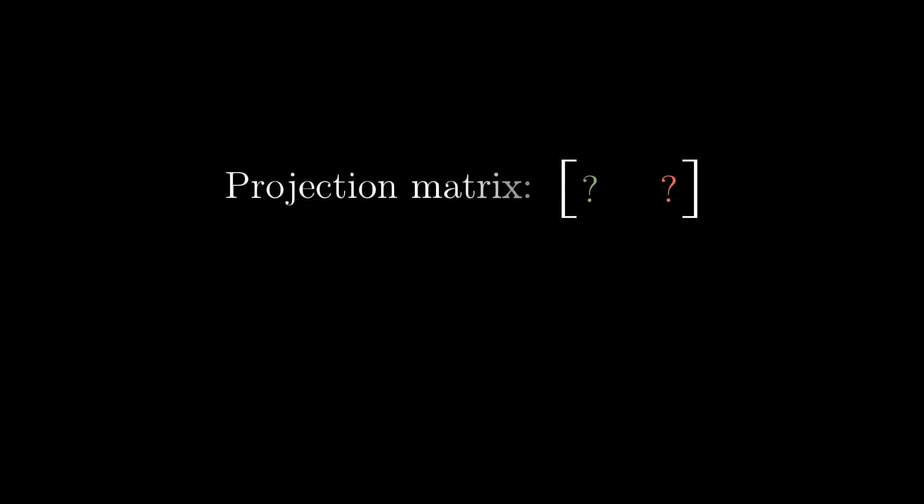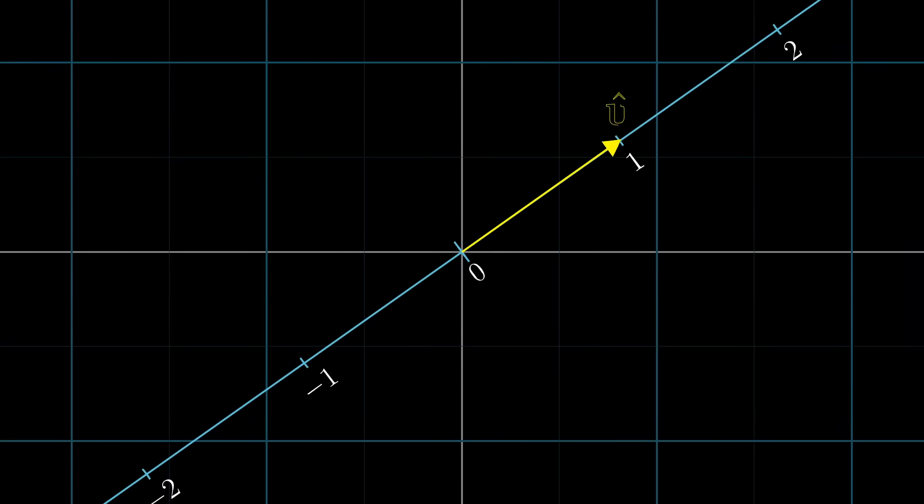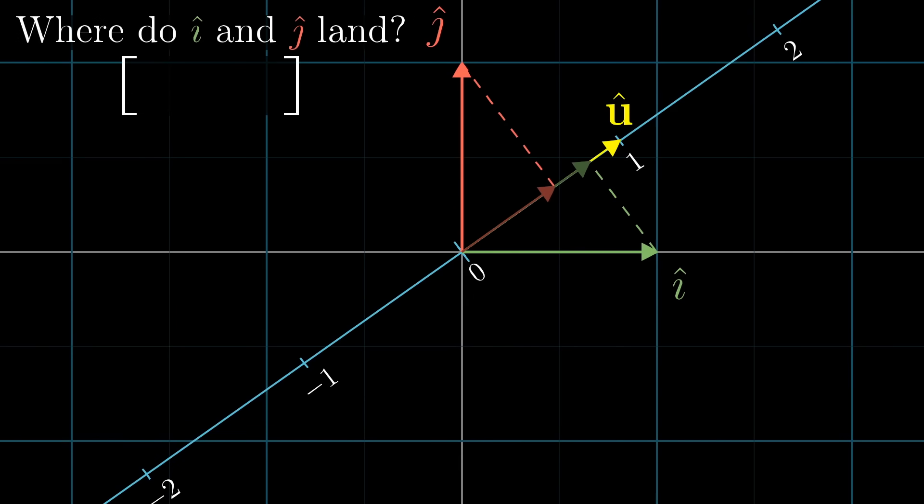With this projection, we just defined a linear transformation from 2D vectors to numbers. So we're going to be able to find some kind of 1 by 2 matrix that describes that transformation. To find that 1 by 2 matrix, let's zoom in on this diagonal number line setup and think about where i-hat and j-hat each land, since those landing spots are going to be the columns of the matrix.